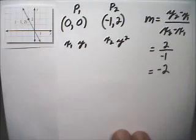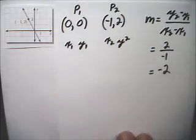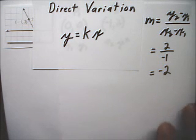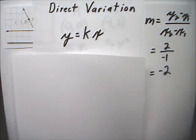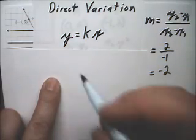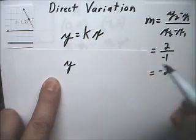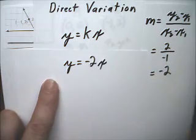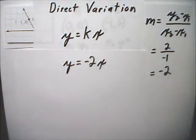So our equation, according to direct variation, is y equals kx. We figured out that k is negative 2. So our equation is y equals negative 2x. And that's part A.